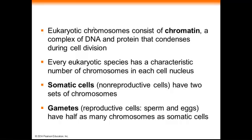We can also distinguish the two different kinds of cells that undergo cell division based on the numbers of chromosomes. Somatic cells, which are the cells found throughout a body — in a human, all the body cells that are not reproductive — have two sets of chromosomes. By contrast, the gametes, which are the reproductive cells, have only one set of chromosomes.